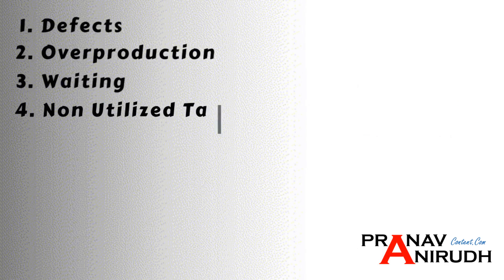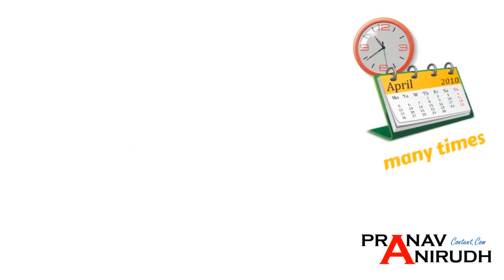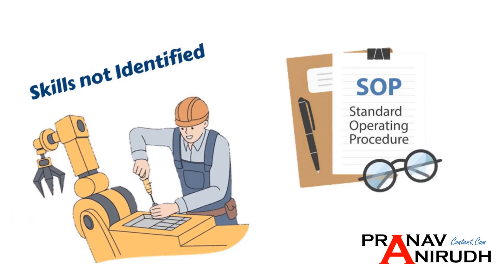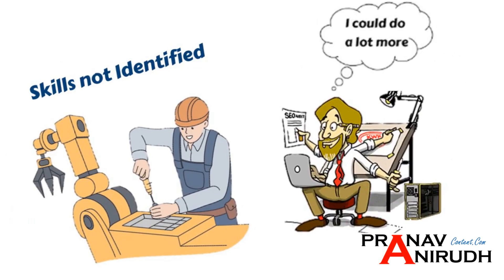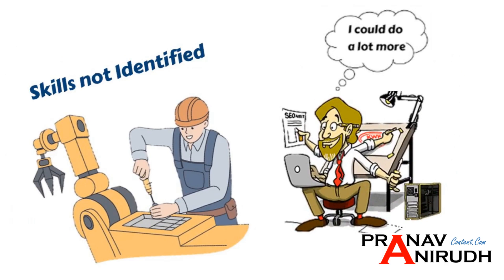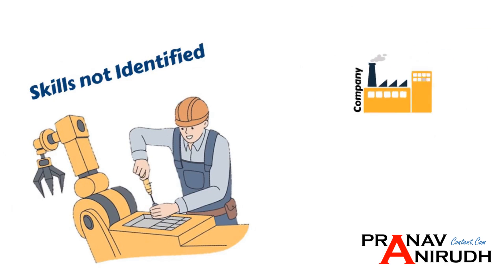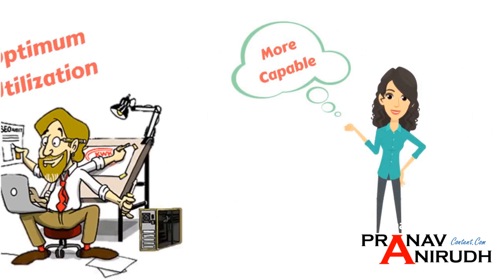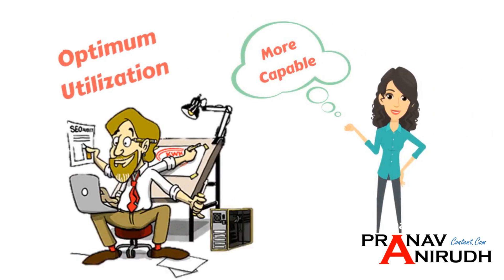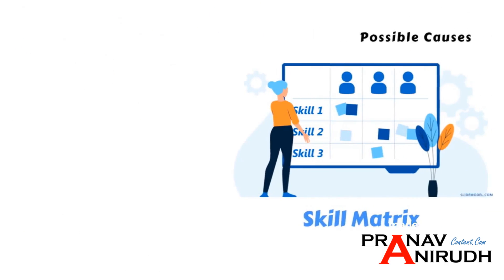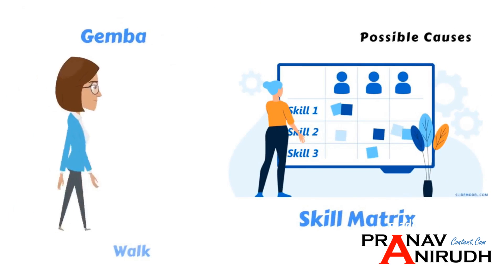The next waste is Non-utilized Talent. Many times employees' skills are not identified; they are just given SOP-based tasks. But the employee knows a lot more apart from their regular tasks, and the company needs to identify employees' capabilities and utilize them in an optimal way. Possible causes include not practicing skill metrics and not practicing Gemba.